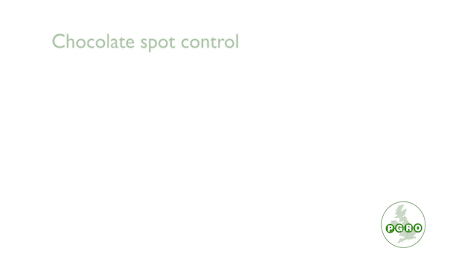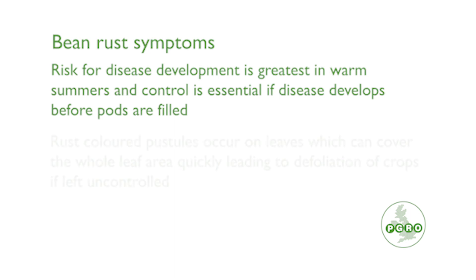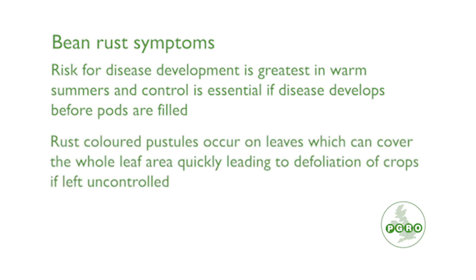A very damaging late-season disease is bean rust. Infection starts in periods of warm days and humid nights, usually from June to July onwards. Rust-colored pustules occur on leaves which can, if left uncontrolled, cover the whole leaf area quickly, which then leads to defoliation of the whole crop.